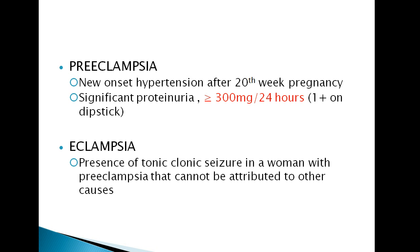Urinary tract infection usually presents with proteinuria, so we must exclude that. If the patient had 1 plus proteinuria and also had a urinary tract infection, it is probably not preeclampsia. Eclampsia is the presence of tonic-clonic seizure in a woman with preeclampsia that cannot be attributed to other causes. If the patient presents with tonic-clonic seizure during pregnancy without any other causes — such as CNS causes or metabolic problems — we diagnose it as eclampsia.